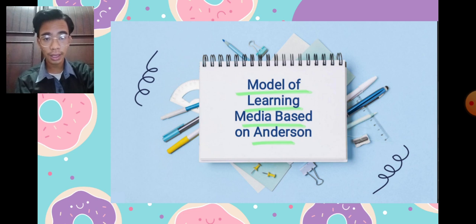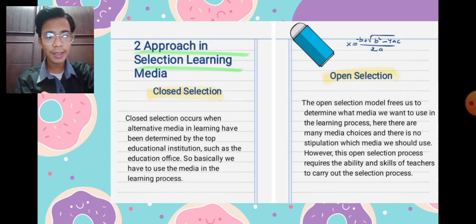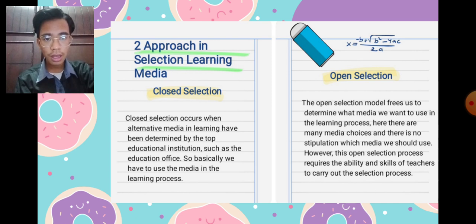The second material is the model of learning media based on Anderson. Anderson identifies two approaches to selecting learning media. The first is closed selection, where the alternative media and learning have been determined by the top educational institution, such as the education office, so we basically have to use a designated media in the learning process. The second is open selection, where the model is free for us to determine what media we want to use.